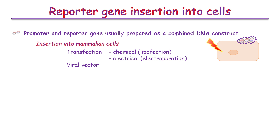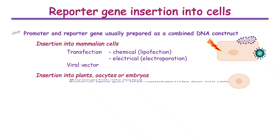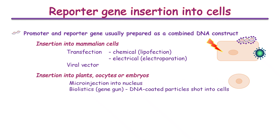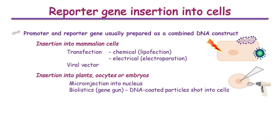DNA constructs can also be inserted using viral vectors. Plant cells and embryos are more robust, so can withstand harsher physical methods such as microinjection into the nucleus, or biolistics — also known as a gene gun — where DNA-coated particles are shot into the cell.